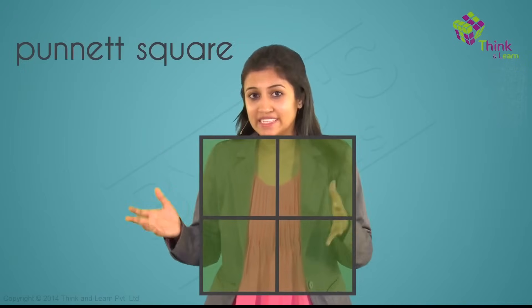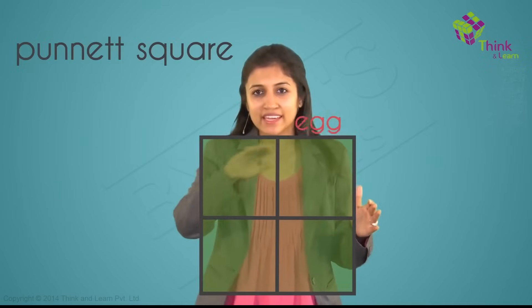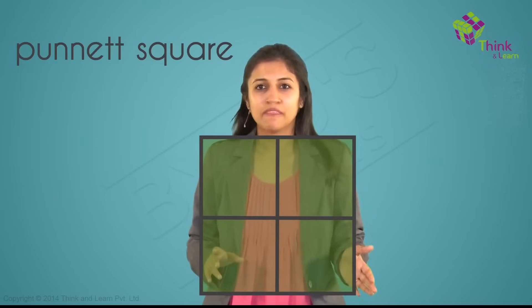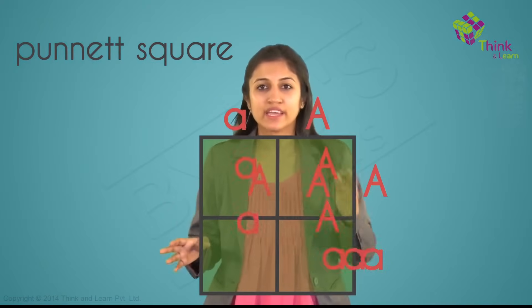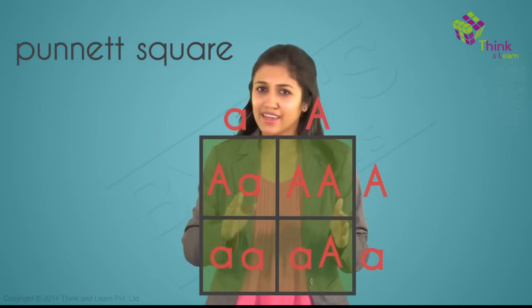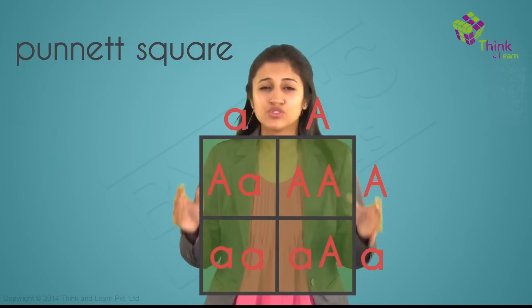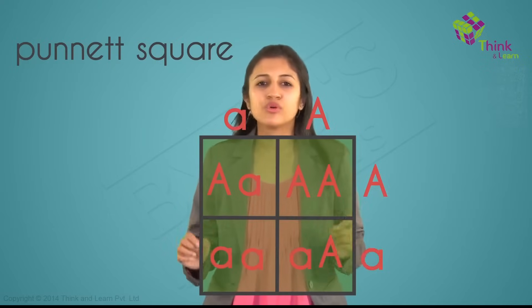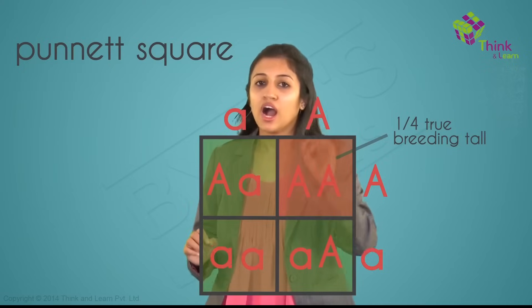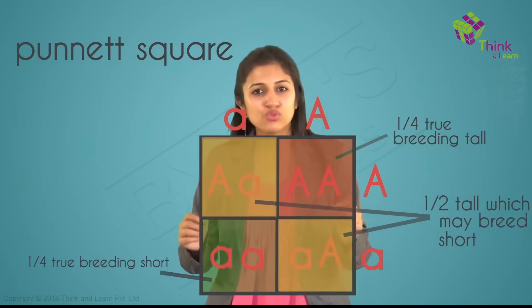It's got a fancy name — it's called a Punnett square. Let's write down the four alleles and do a simple combination. You have the egg here, the pollen here, capital A and small a on one axis, and small a here on the other. Bringing them together, you get AA, Aa, Aa, and aa. So when the hybrids were crossed, he got one-fourth true-breeding talls, half talls which may breed shorts, and one-fourth true-breeding shorts.